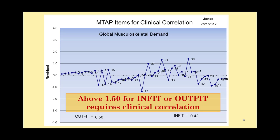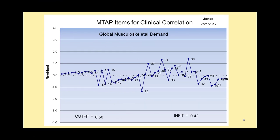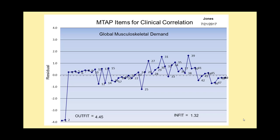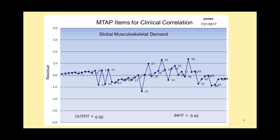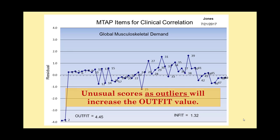I'd like to demonstrate how outfit works by having you enter a score of 5 in these two boxes. After you've done that, click Control-B. Items 1 and 2 now vary tremendously from what is expected, and the outfit score has increased to 4.45 — a tremendous increase. The outfit score has gone from 0.42 to 1.32. When we have unusual scores at the furthest extent of the person's ability range, the outfit score is the one most profoundly affected. Unusual scores as outliers will increase the outfit value.